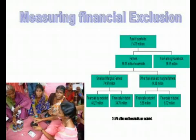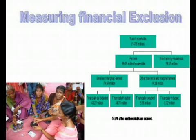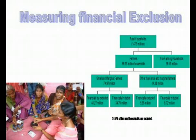Let us look at this slide which shows the measures of financial inclusion. In India, if you consider that the number of rural households is 147.9 million, then out of these, 89.35 million households are farmers and 58.55 million belong to non-farming households. Out of these farmer households, small and marginal farmers constitute 74.97 million and other than small and marginal farmers are 14.38 million. Out of small and marginal farmers, financially excluded are 40.27 million — a huge number — and financially included are 34.70 million. Other than small and marginal farmers, financially excluded are 5.66 million and financially included are 8.72 million.